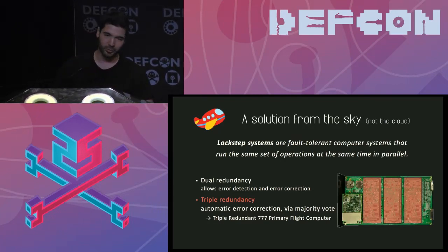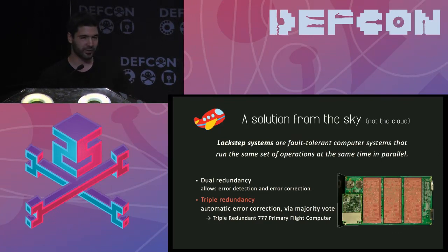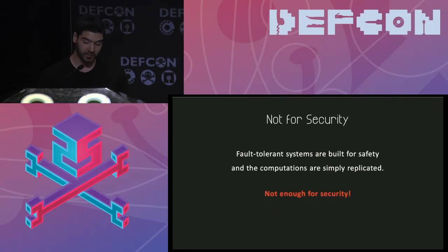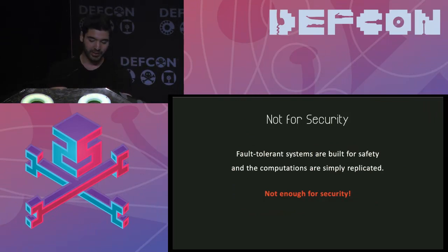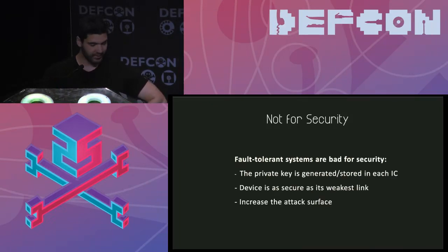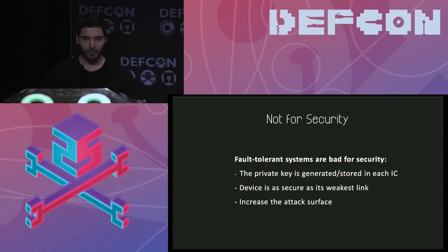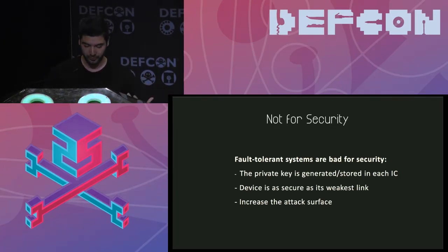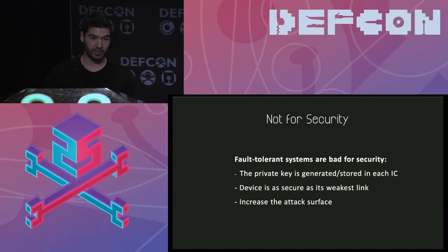This is used in autopilots on commercial aircraft and in space. However, fault tolerant systems are built for safety, not security. Replicating computations across three processors is bad for security because you end up with a system storing your secret key in three places — if one processor is compromised, you're prone to attack. Instead of improving security, you increase your attack surface.